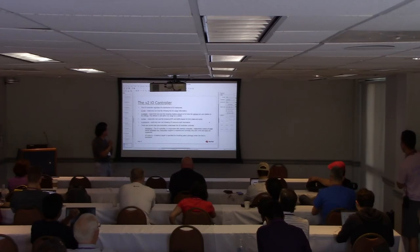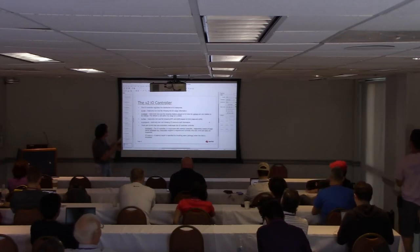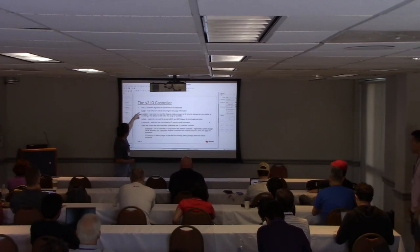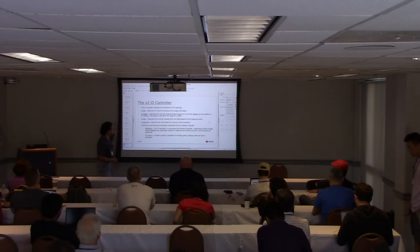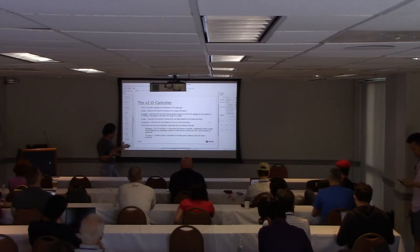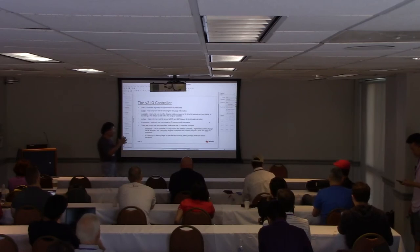The IO controller is the final resource controller. One thing to notice is that the naming convention between different V2 controllers is more consistent than in V1. You have both max, weight, and stat files appearing across many of the V2 control groups. So once you see the name, you have a rough idea of what they do and how to use them, even though they are controlling different resources within the system.